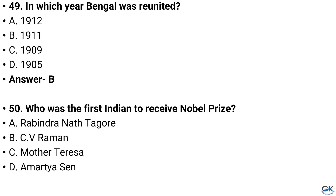Question number 50. Who was the first Indian to receive the Nobel Prize? Option A: Rabindranath Tagore, Option B: C.V. Raman, Option C: Mother Teresa, Option D: Amartya Sen. And the answer is Option A: Rabindranath Tagore.